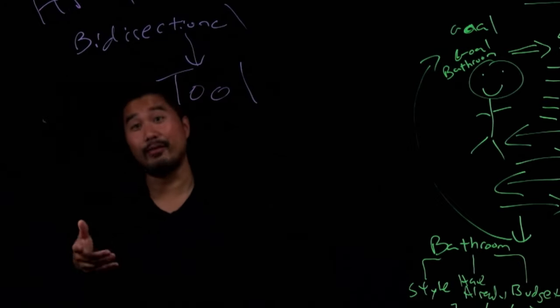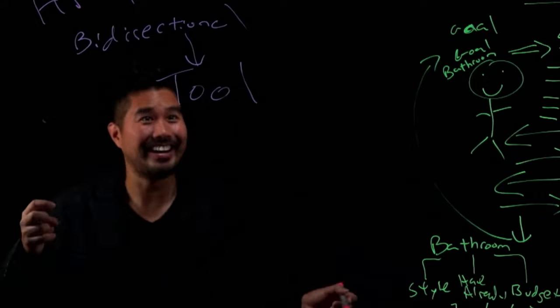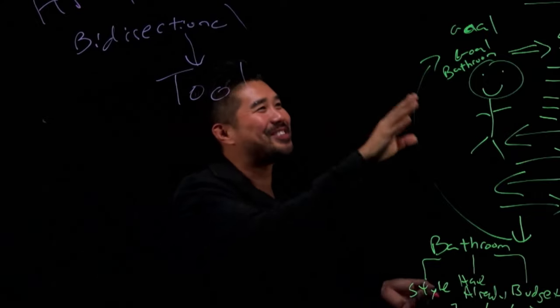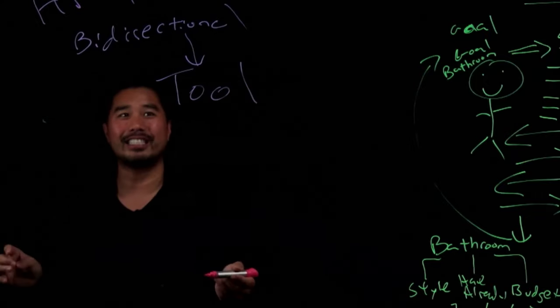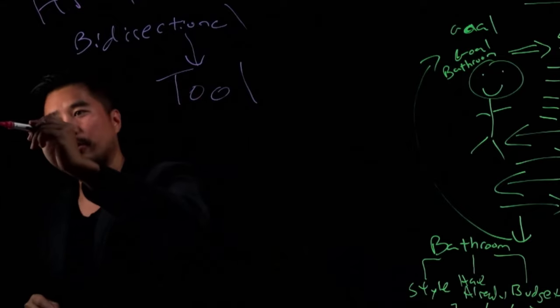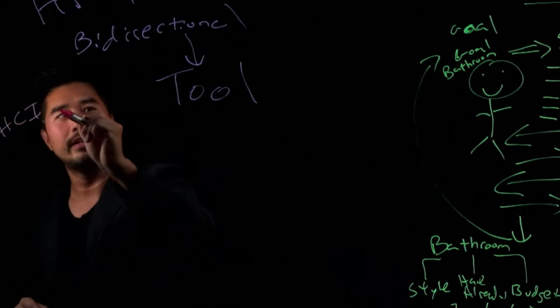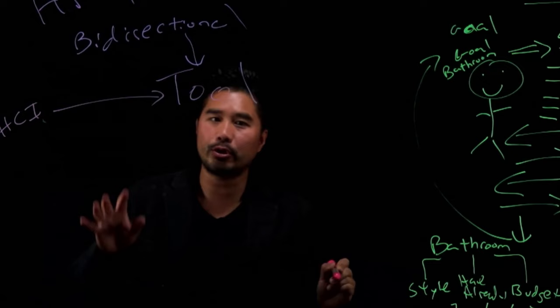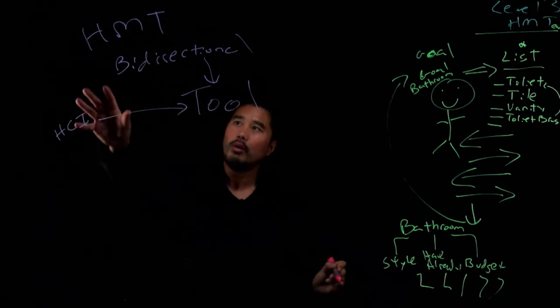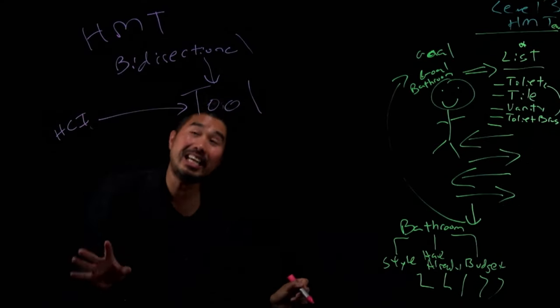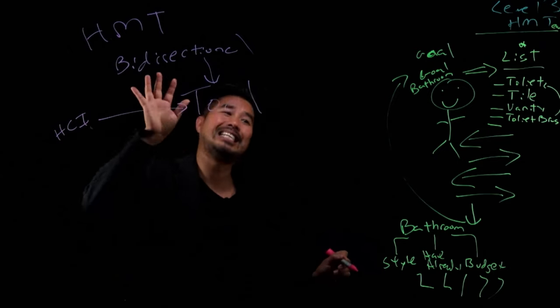When we talk about human to computer interactions, we, the human, when people call say HCI, those are really, it's the computer. The machine is a really a tool. When we talk about human machine teaming, it's more about a partner, a teammate.